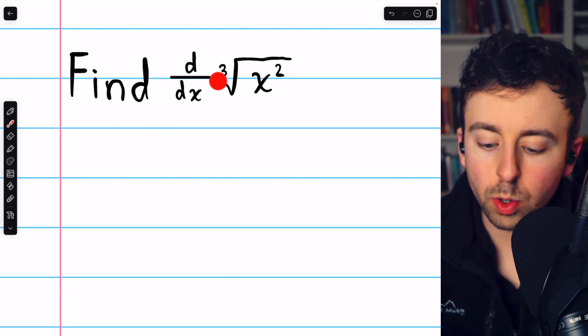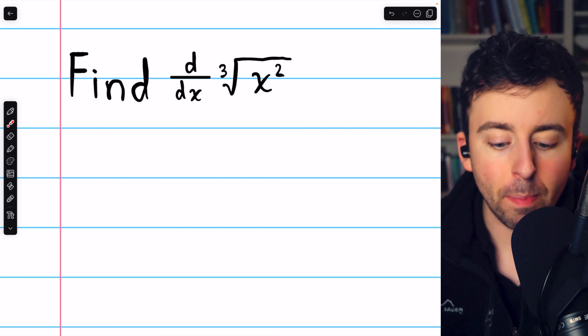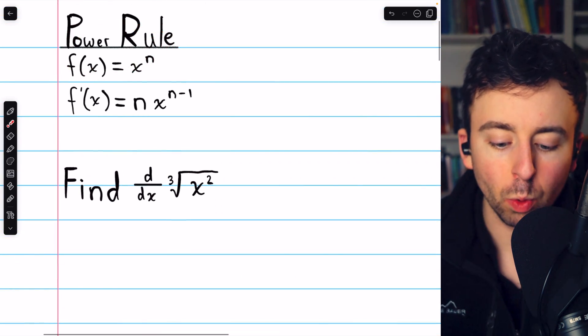To find the derivative of the cube root of x squared, we're going to rewrite it as a power, and then we can use the power rule.